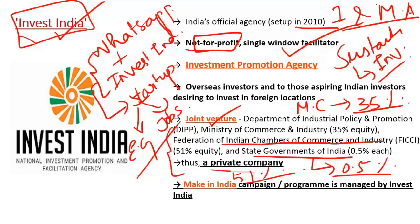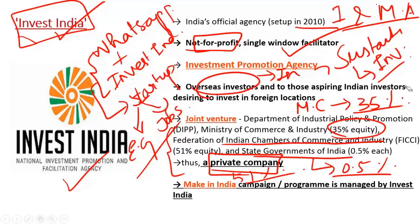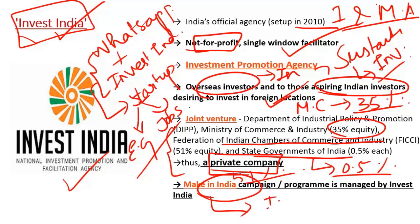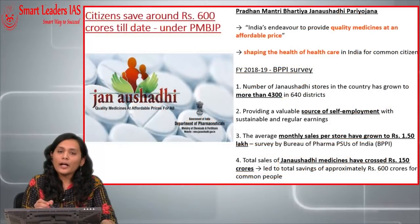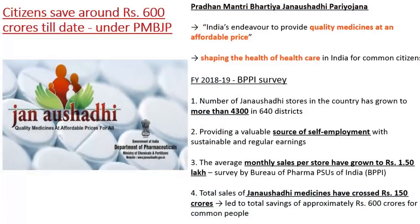Each state government constitutes 0.5% of the equity share, and FICCI constitutes 51% of the total share. Overall, Invest India is a private company since the government of India's equity share is less than 50%. Apart from creating a conducive environment for overseas investors, it also helps aspiring Indian investors to invest in foreign locations. Another important function of Invest India is to promote the Make in India campaign, which is actually managed by Invest India.